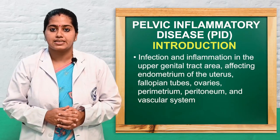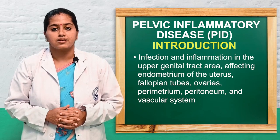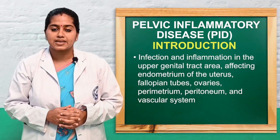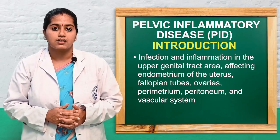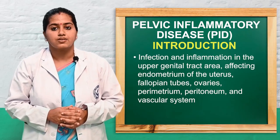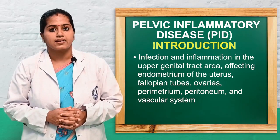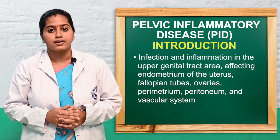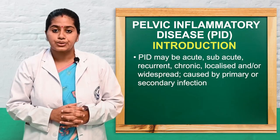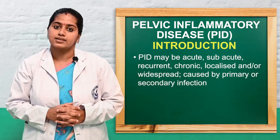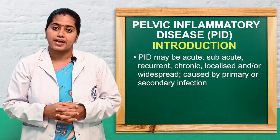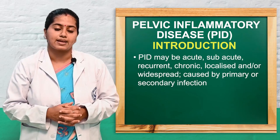Pelvic inflammatory disease, or PID, is an infection and inflammation syndrome that takes place in the genital tract — mainly the upper genital tract — affecting the endometrium of the uterus, fallopian tube, ovary, perimetrium, peritoneum, and the vascular system. This may be acute, subacute, chronic, recurrent, localized, or generalized infection due to primary or secondary infection of organisms.